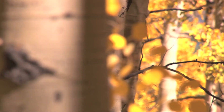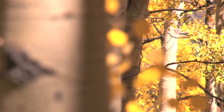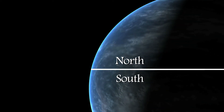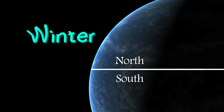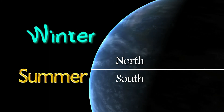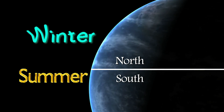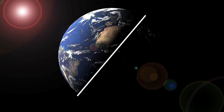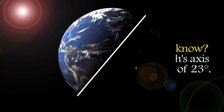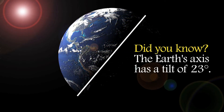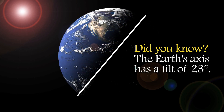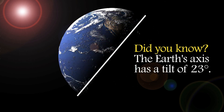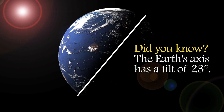Before we talk about seasons, you need to know why seasons occur. When the northern hemisphere is experiencing winter, the southern hemisphere is experiencing summer. This is due to the earth's tilt, which is the cause of the seasons. That being said, let's continue on to learning more about the seasons.